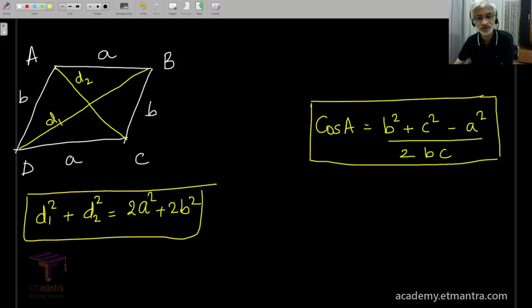All you need to do is apply this cosine rule twice. So I shall do that now. Cos A is nothing but B² minus d₁² and this 2AB I shall write on this side.